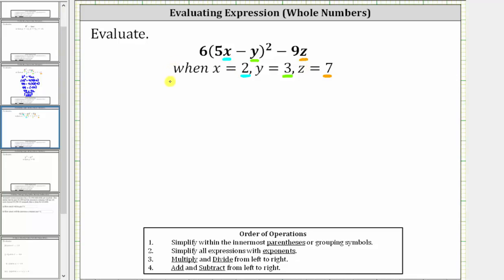Performing the substitution, we have 6 times the square of the quantity 5 times x minus y, which gives us 5 times 2 minus 3. And then we have minus 9z, or minus 9 times z, which gives us minus 9 times 7.